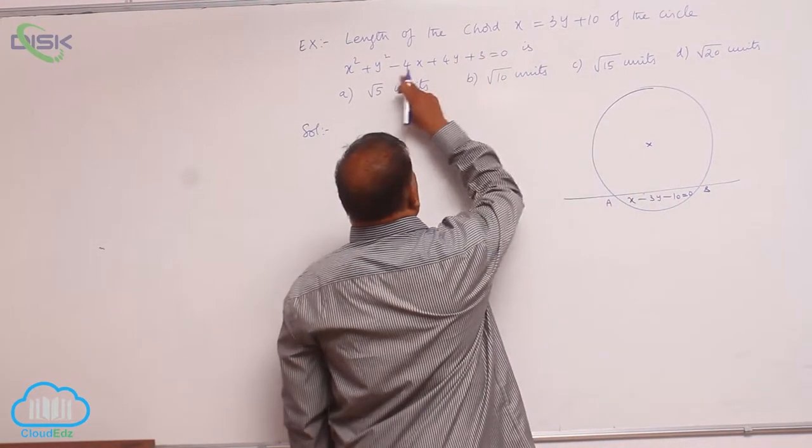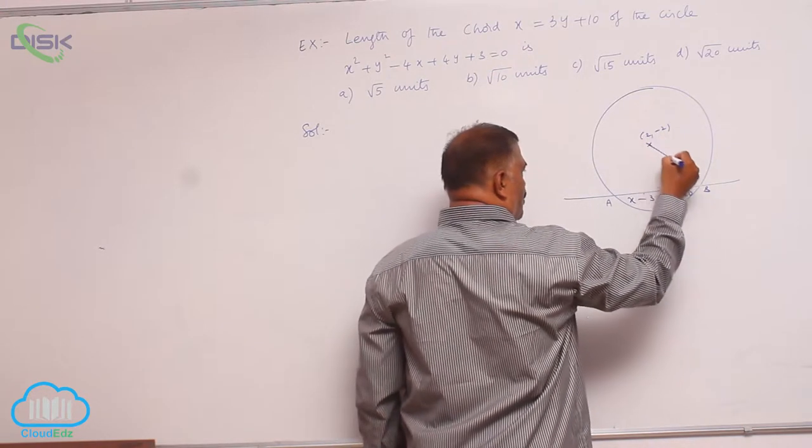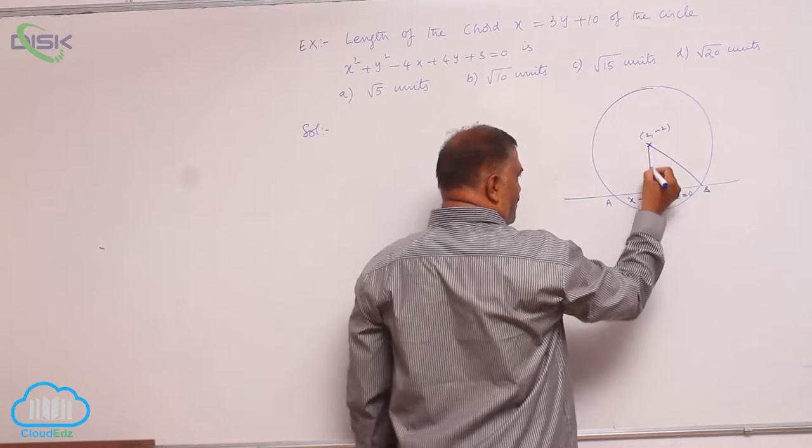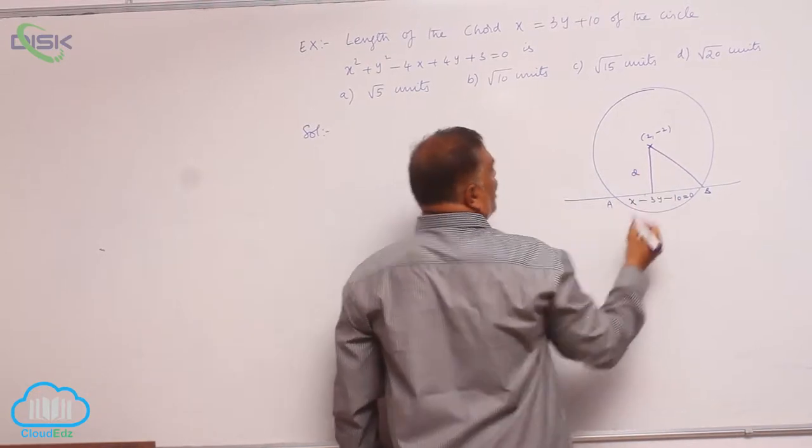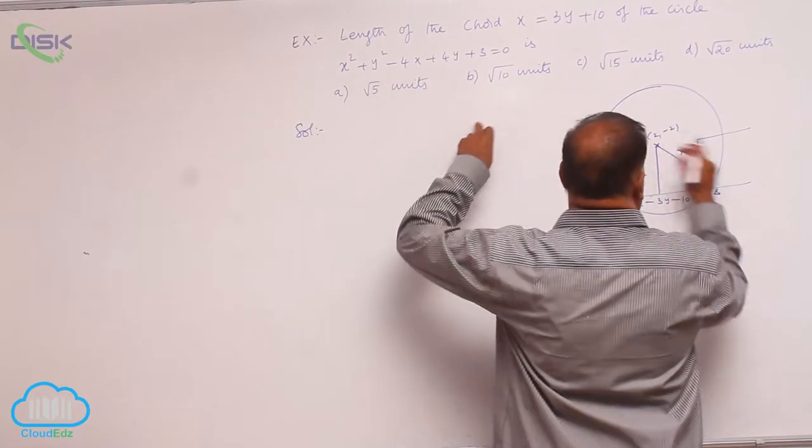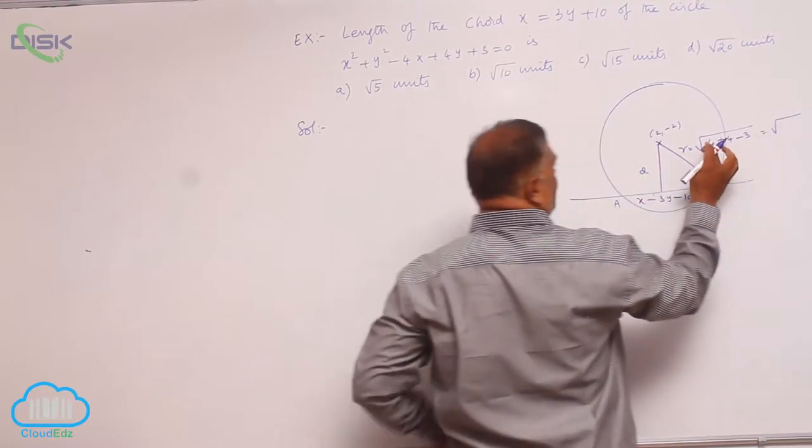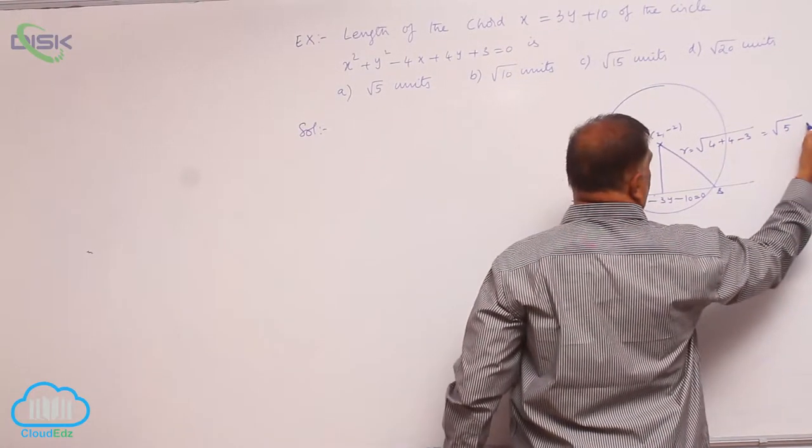So what will be the center here? This is 2 comma negative 2. Now this is going to be the radius, this is the perpendicular distance. Now r is given by square root of 4 plus 4 minus 3, this is root of 8 minus 3, this is 5.